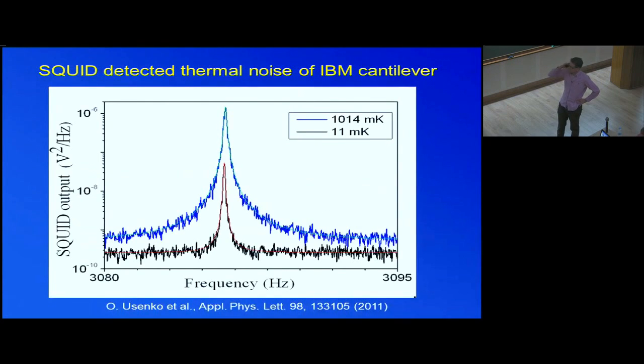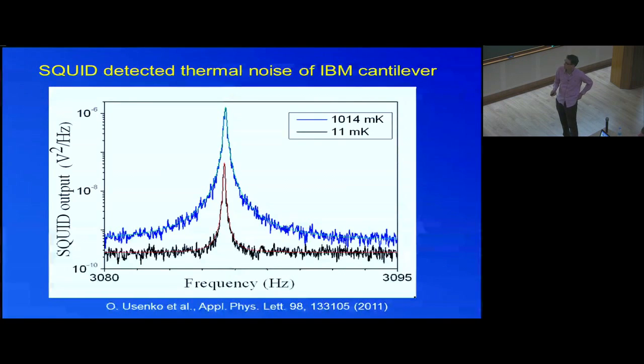So when we first did this, with Sasha Usenko, we could detect the thermal motion of a resonator that was set up in this way. And at one Kelvin, we have a lot more thermal motion than at 10 millikelvin. And also the Q is a little bit higher for this low temperature than for the higher temperature. And then what we did is we lowered the temperature and measured the energy in this peak as a function of temperature. And this can be calibrated very accurately.